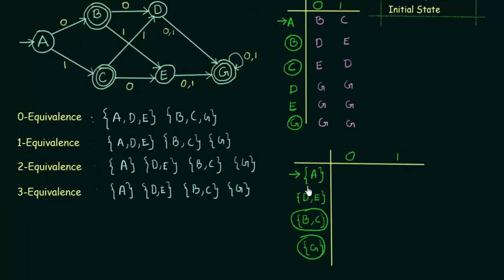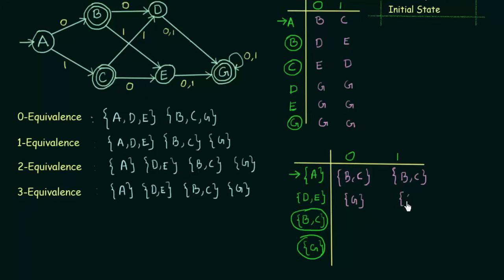Here I have the transition table for the new minimized DFA with states A, D/E, B/C, and G. A was the initial state in the original DFA, so A is the initial state here too. B, C, and G were final states, so B/C and G are final states here. Filling the table: A on input 0 goes to B, so we write BC; on input 1 it goes to C, so we write BC. DE on input 0 goes to G, and on input 1 also goes to G. BC on input 0 goes to DE, and on input 1 also goes to DE. State G on input 0 goes to G itself, and on input 1 also goes to G itself. The transition table is now complete.